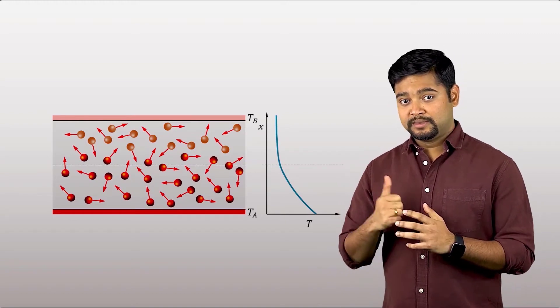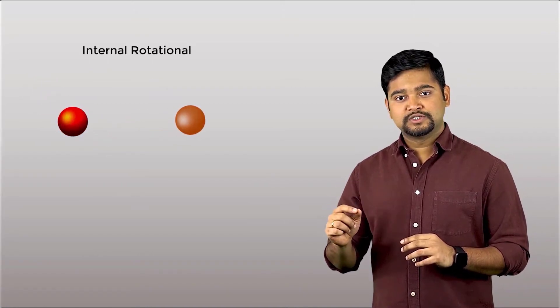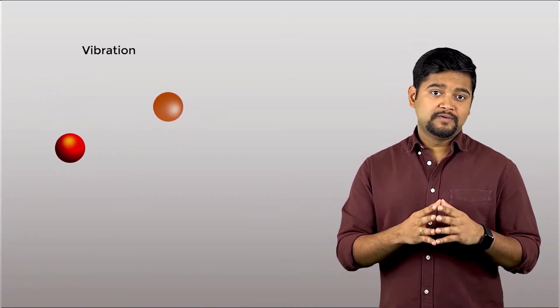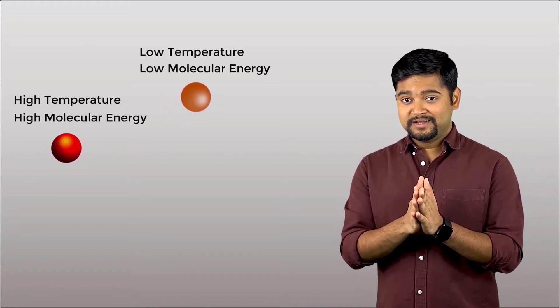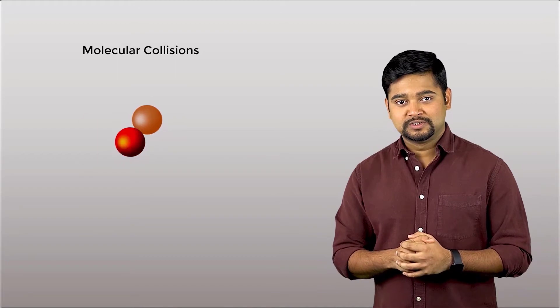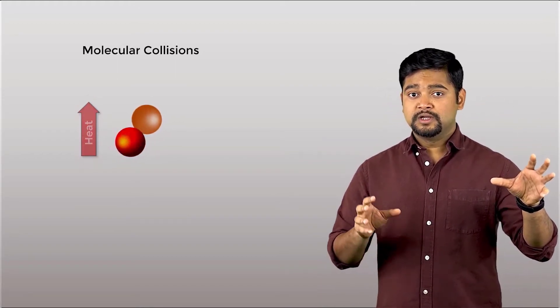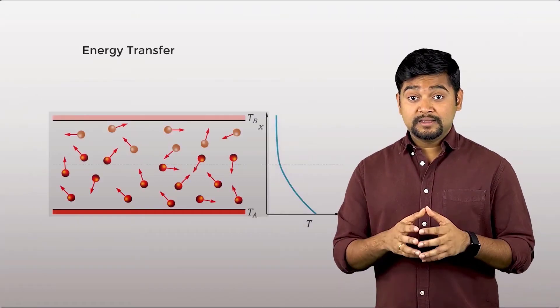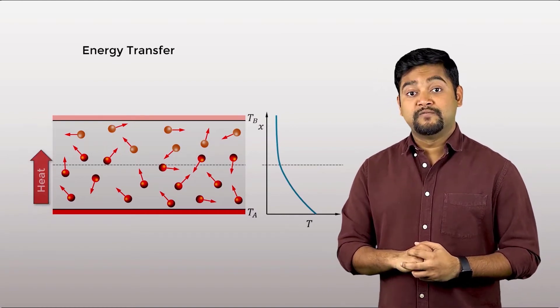Temperature at any point in this gas can be associated with the energy of random translational, internal rotational and vibrational motion of the gas molecules. And as one might expect, higher molecular energies are associated with higher temperatures. Now, these random motions will certainly lead to molecular collisions, which helps in the transfer of energy from more energetic molecules to the less energetic ones. And in this way, the energy is transferred by conduction in the direction of decreasing temperature.